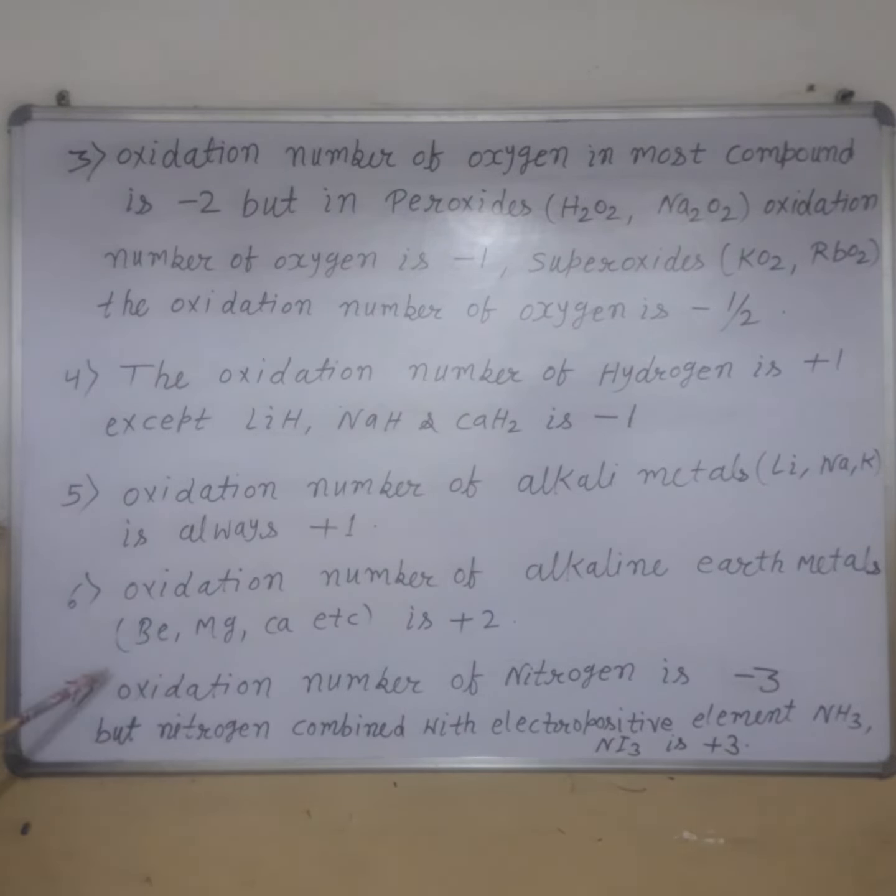Oxidation number of alkaline earth metals like Be, Mg, and Ca is plus 2. Oxidation number of nitrogen is minus 3, but nitrogen combined with electropositive elements like in NH3 is plus 3.